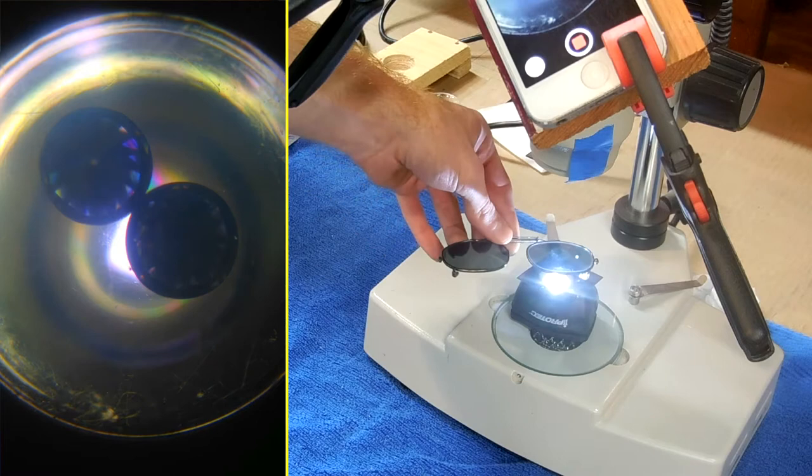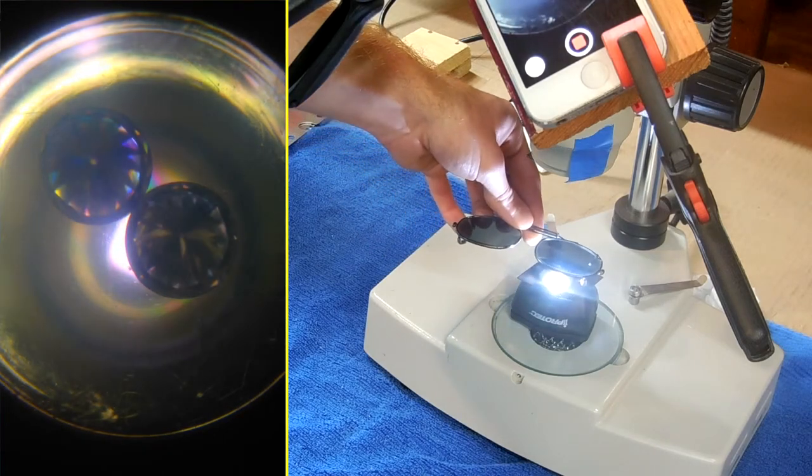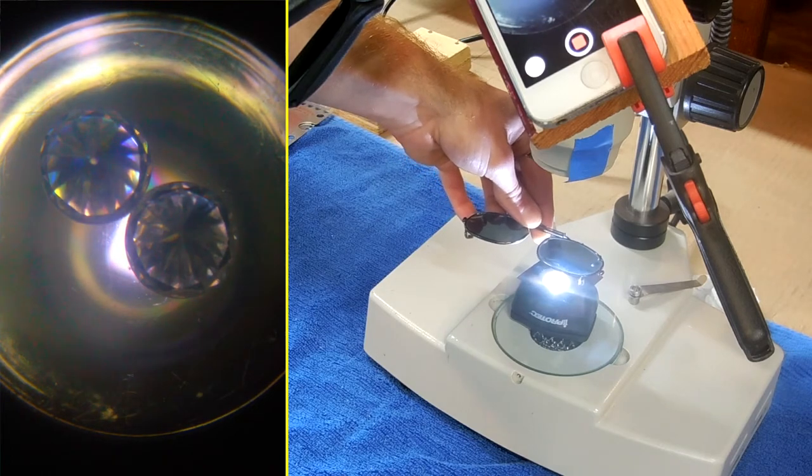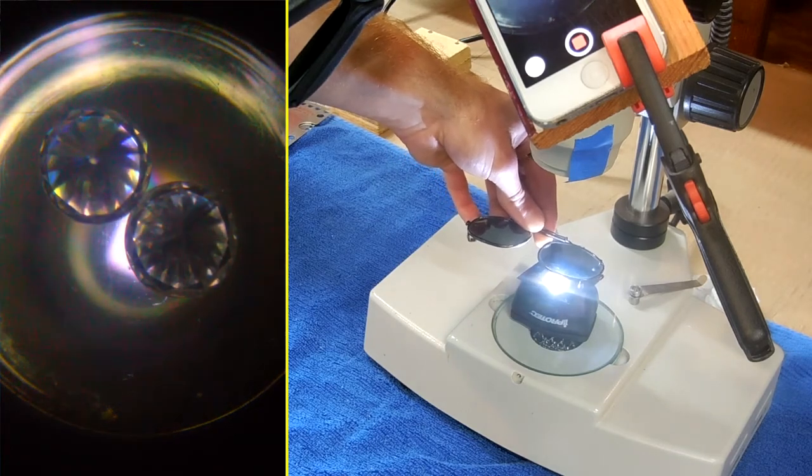Cubic zirconia, on the other hand, is slightly birefringent because of stabilizing minerals used in its production. Under cross polarizers, diamonds never change color, while cubic zirconia lights up with birefringent colors.